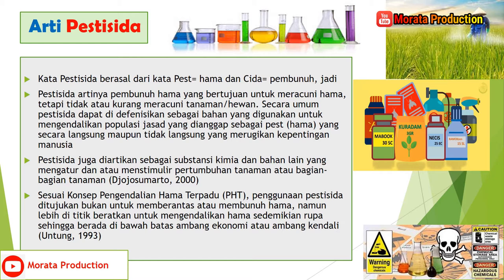Sesuai konsep Pengendalian Hama Terpadu, disingkat PHT, penggunaan pestisida ditujukan bukan untuk memerantas atau membunuh hama, namun lebih dititikberatkan untuk mengendalikan hama sedemikian rupa, sehingga berada di bawah ambang ekonomi atau ambang batas kendali, menurut Untung tahun 1993. Di samping ada contoh pestisida, kemasannya dan juga petani yang mengaplikasikannya di sawah.